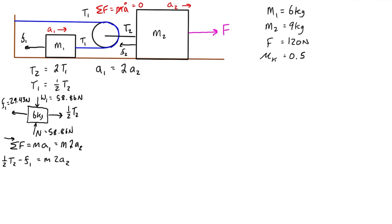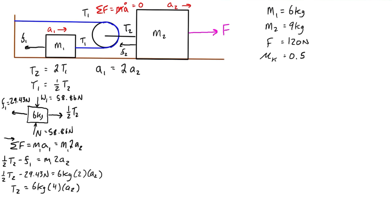Plugging in known values: one-half T2 − 29.43 N = 6 kg × 2·A2. Isolating T2 by multiplying both sides by 2 gives T2 = 6 kg × 4·A2 + 58.86 N. So T2 = 24·A2 + 58.86 N. We'll use this expression when we combine the two free body diagram equations.